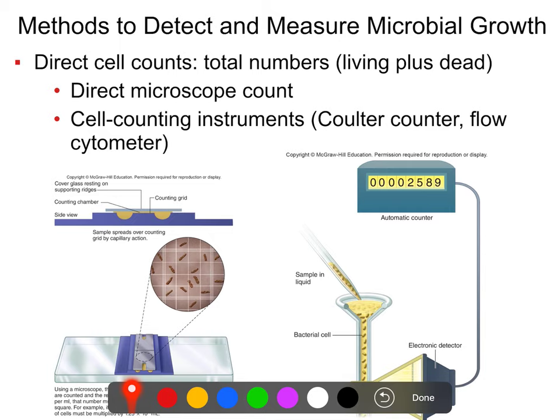This method is fast and cheap in that all you need is a microscope and one of these special counting chamber slides. But it is also tedious and time-consuming — you have to sit there counting, or more likely you have to hire somebody to sit there counting, and that can get expensive over the long term.